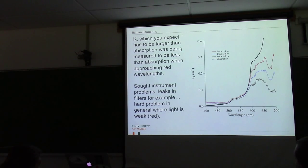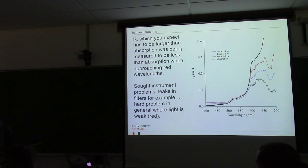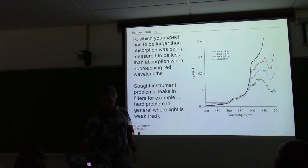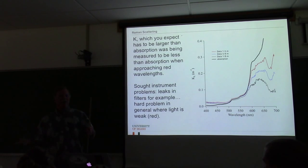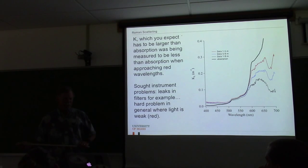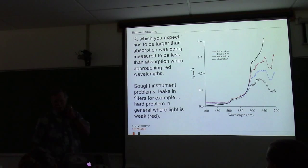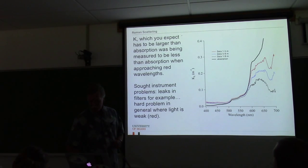Here's an example: the diffuse attenuation coefficient calculated between 1 and 5 meters, 5 and 9 meters, and 1 and 9 meters — in the red region, the diffuse attenuation is less than absorption, and that can't happen. At the time, we were looking for what was wrong. I had gotten to the Viz Lab for my postdoc around the same time as the MERC-1032, and one of my assignments was to figure out if there was a light leak in the instrument.